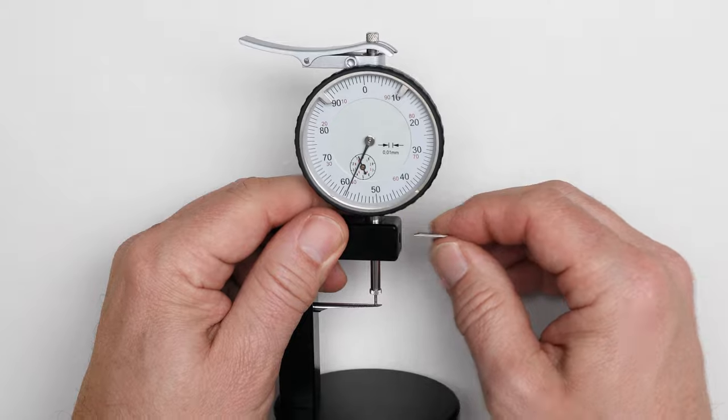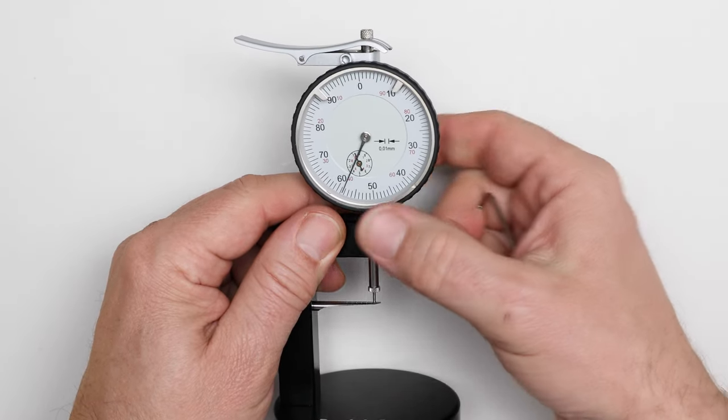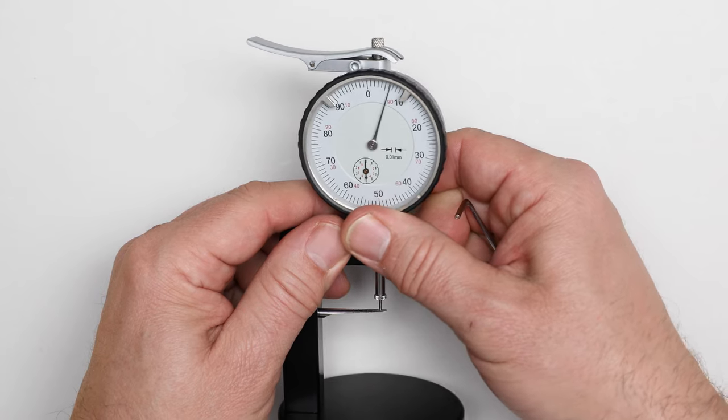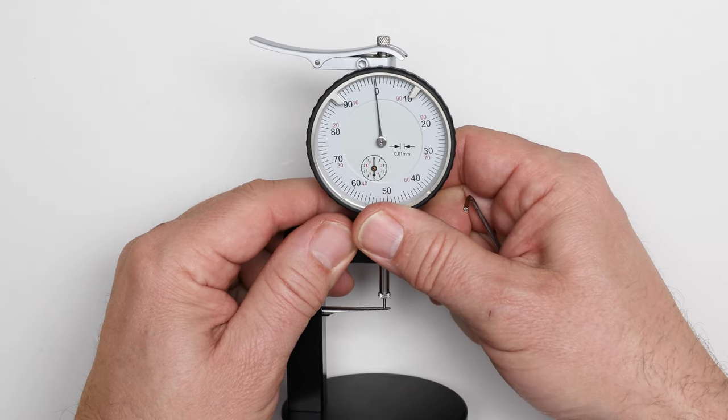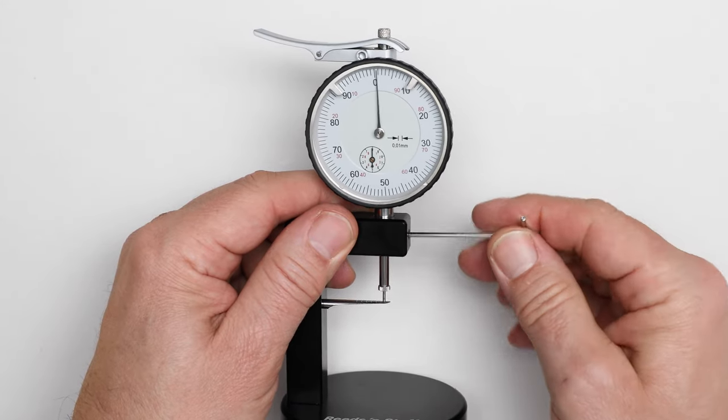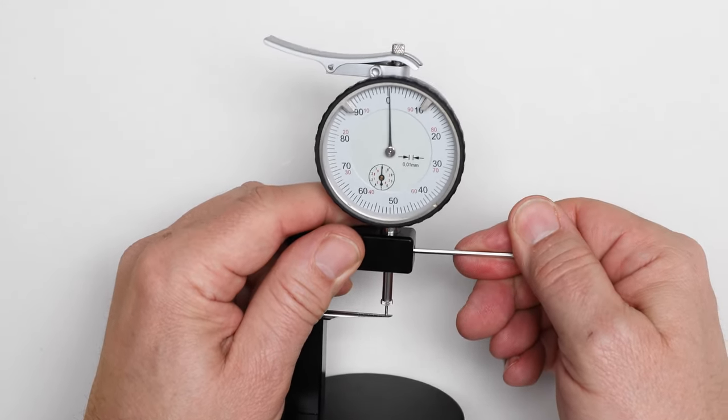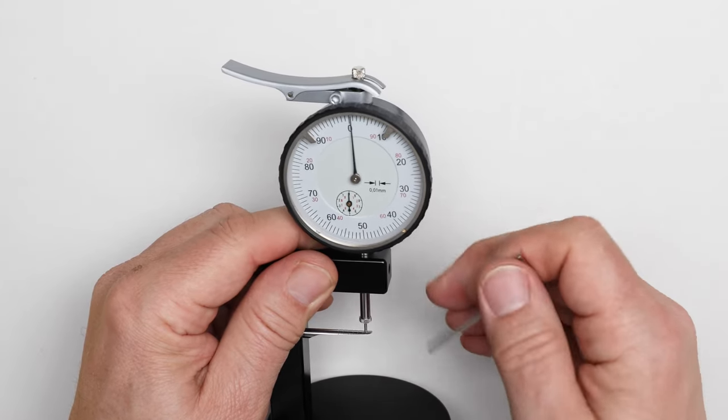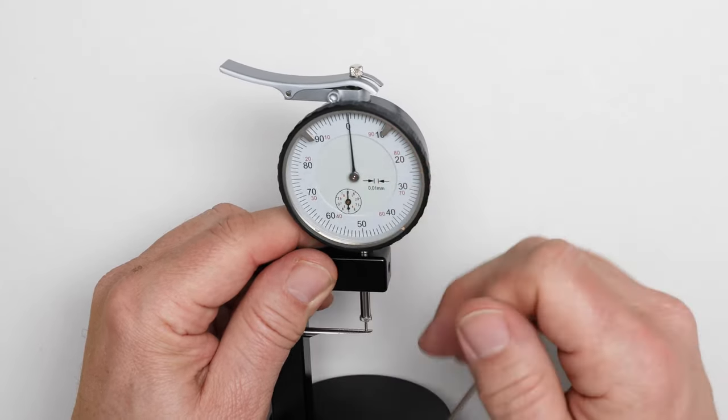To set the dial correctly we open the screw and by moving up or down we change the pointer's position. Don't tighten too much because this will block the axle from going up and down.